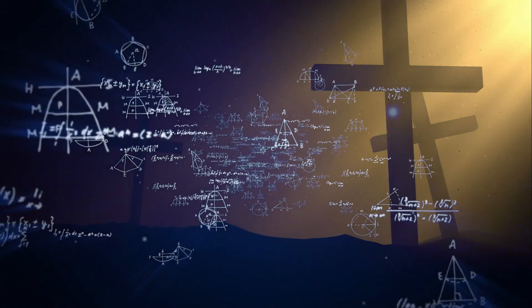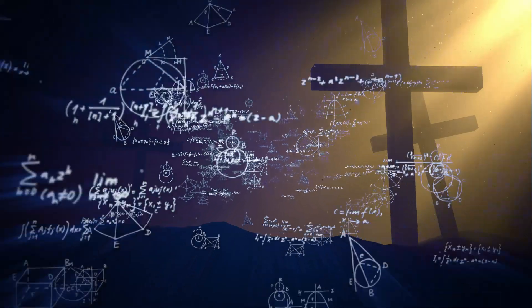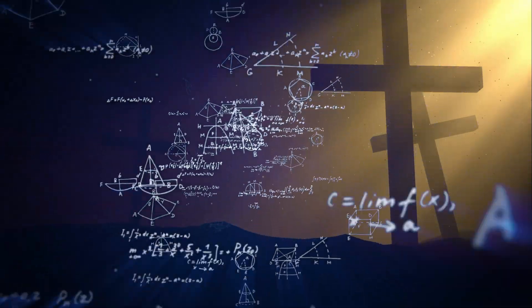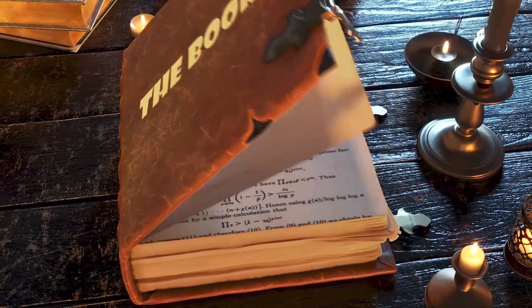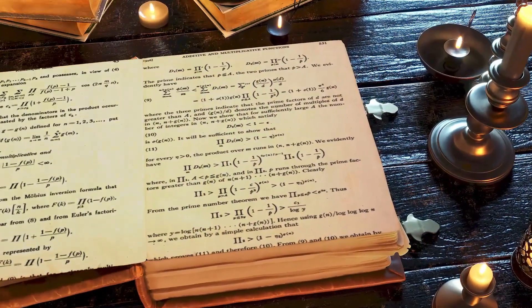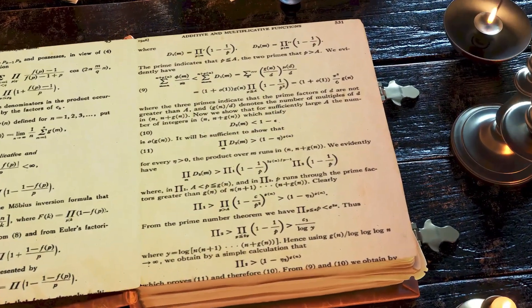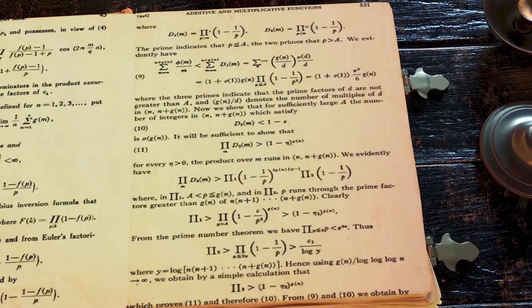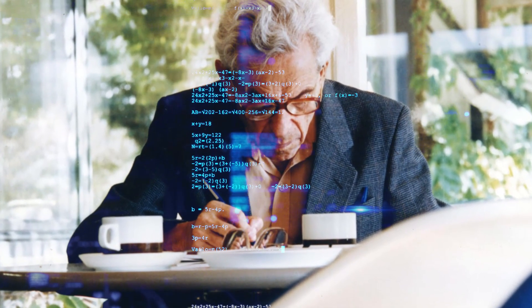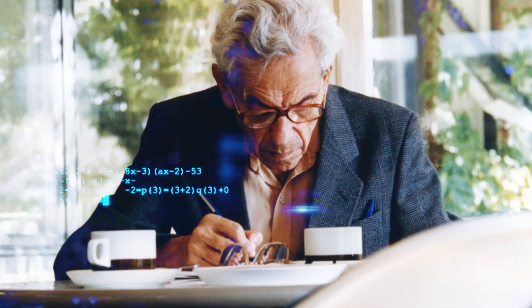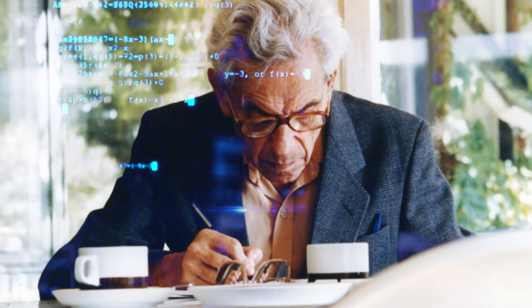Erdos believed that mathematics wasn't just something humans invented. It was something deeper, something eternal. He spoke of a mystical place called the Book, where God, whom he called the Supreme Fascist, kept the most perfect, most elegant proofs for every mathematical truth. Erdos spent his life searching for glimpses of these perfect proofs, knowing he'd never see them all. But that didn't stop him from trying.